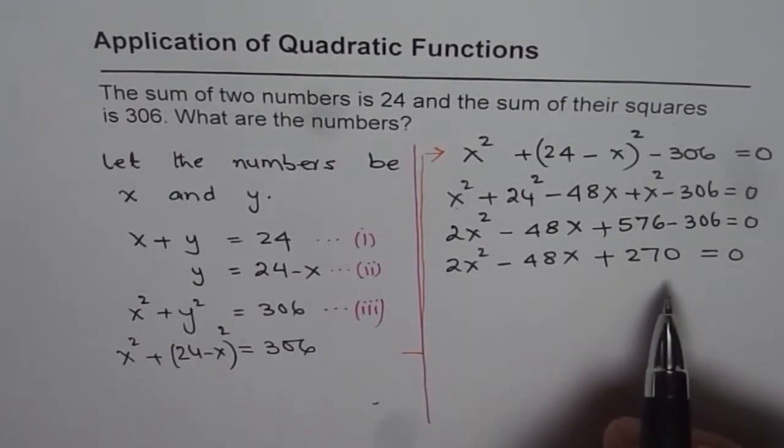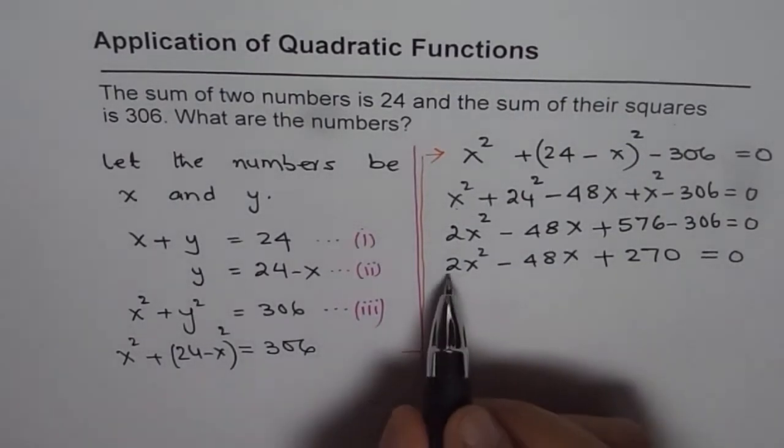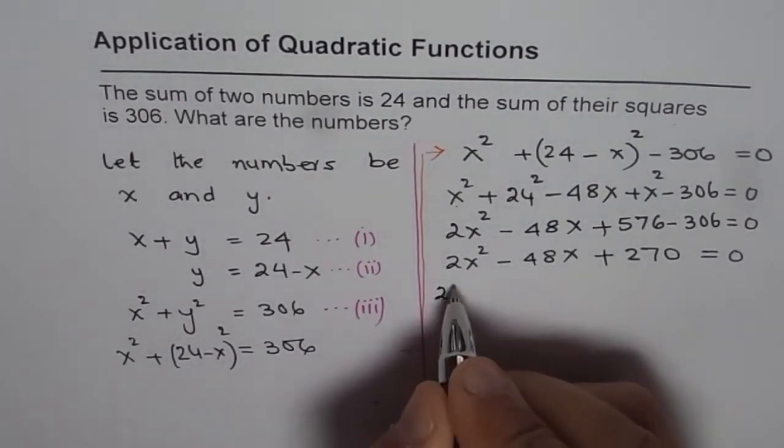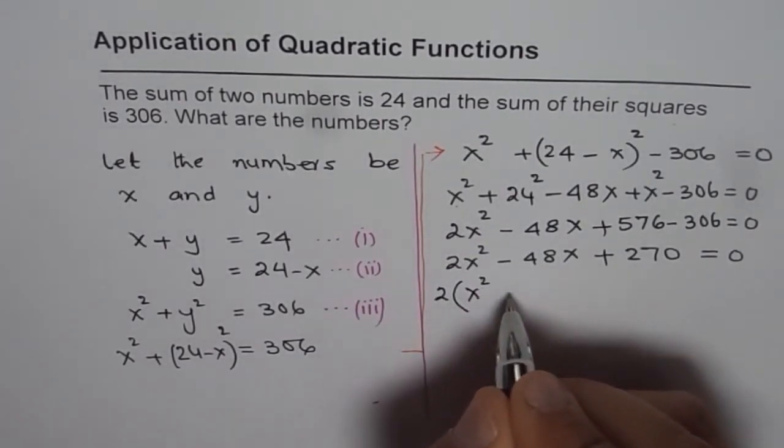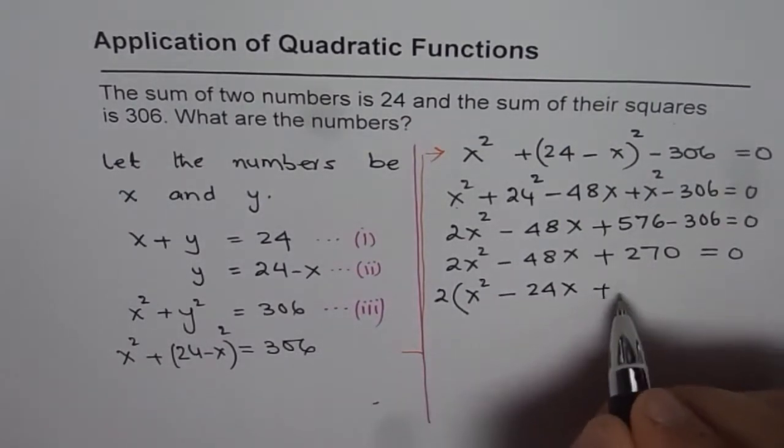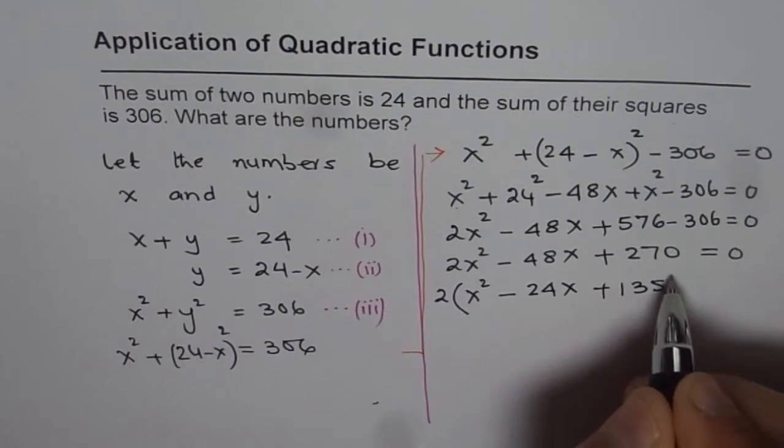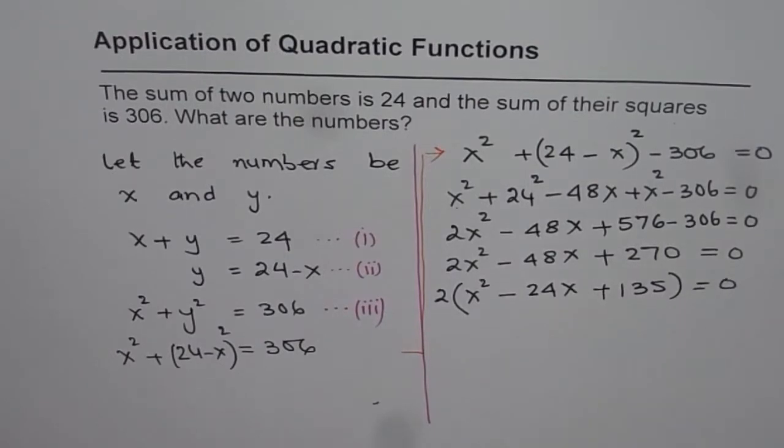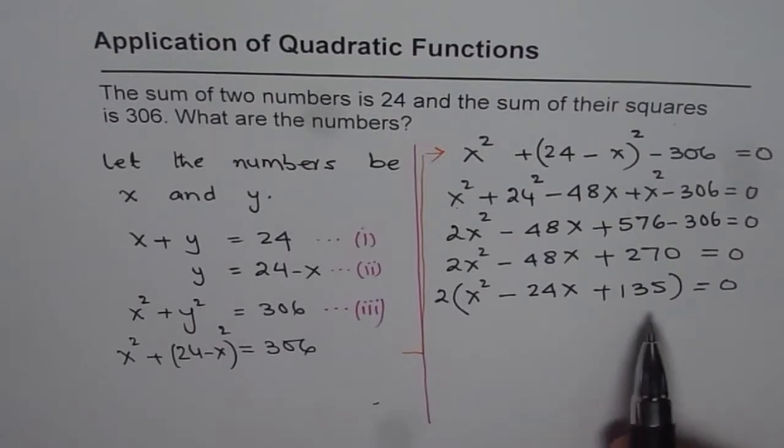Now let us solve by factoring. We can factor out 2 first. In that case I get x squared minus 24x, and half of this which is 135 equals 0. So we can now use quadratic formula or even factor this.